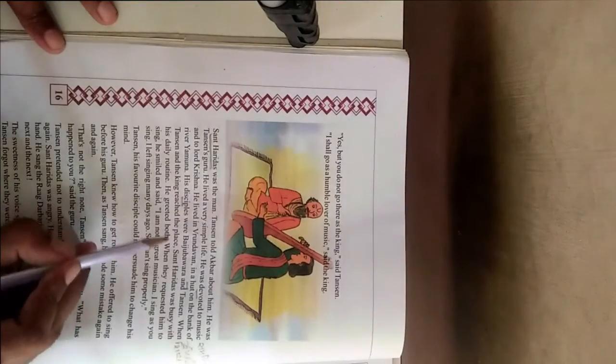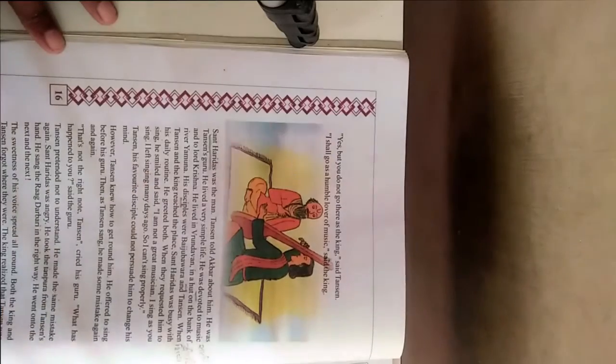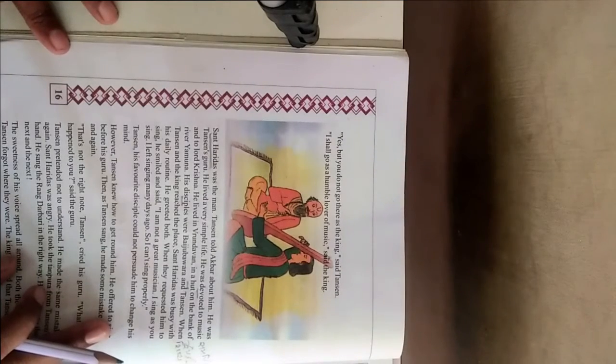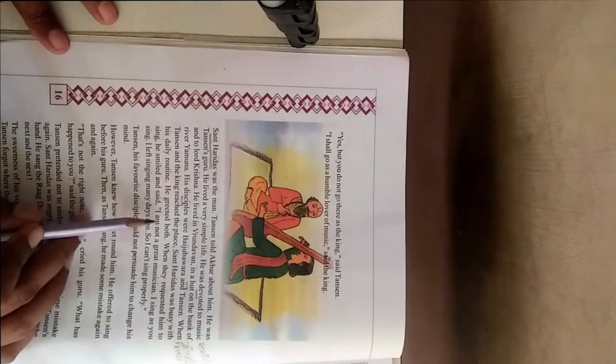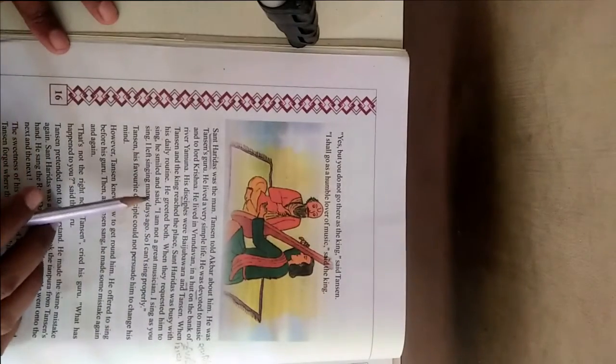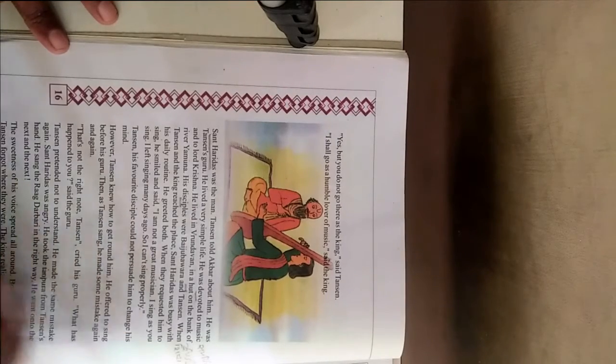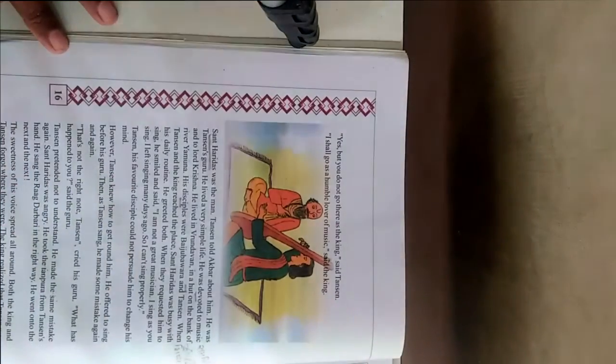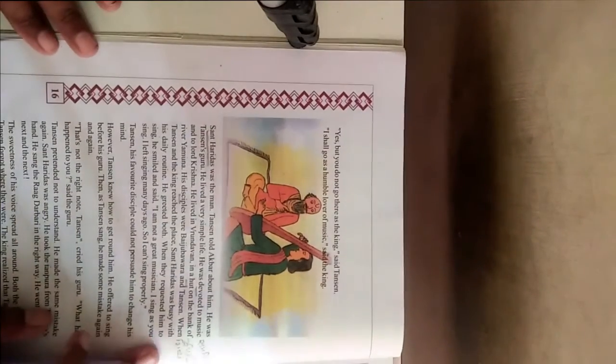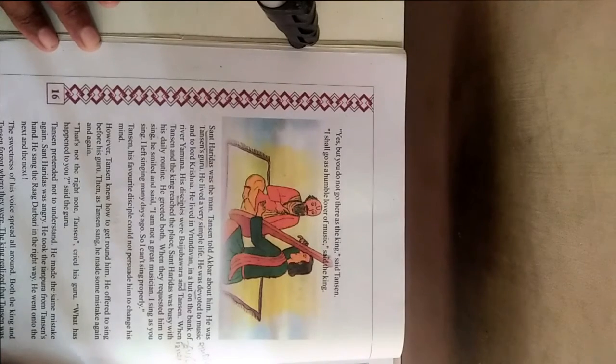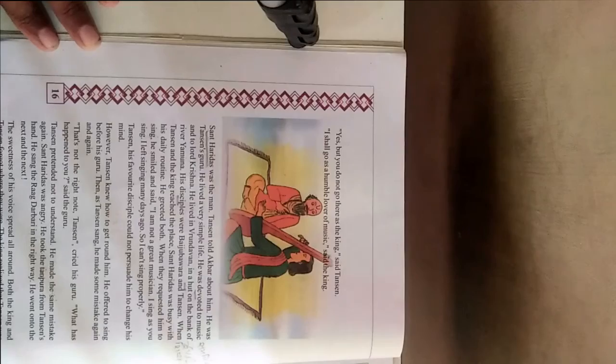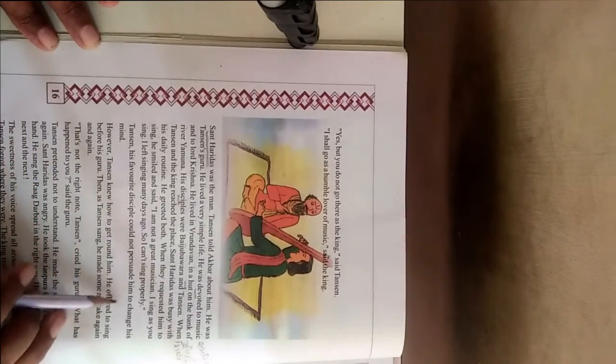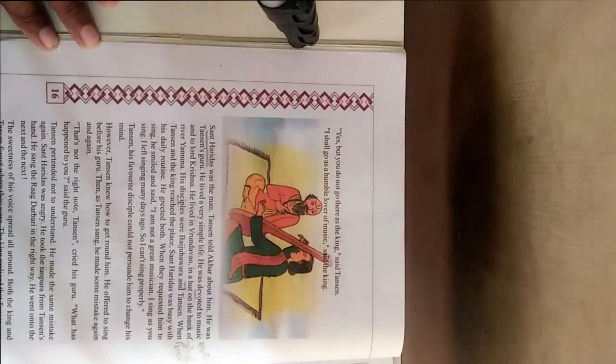When Tansen and the king reached the place, Saint Haridas was busy with his daily routine. He greeted both. When they requested him to sing, he smiled and said, I am not a great musician. I sing as you sing. I left singing many days ago, so I can't sing properly. Tansen, his favorite disciple, could not persuade him to change his mind.